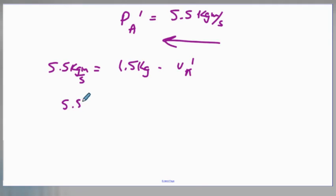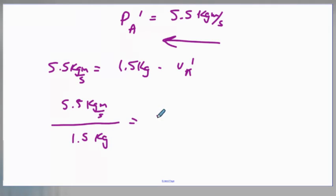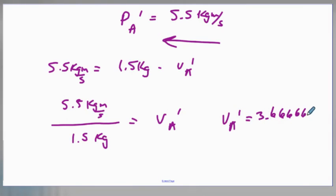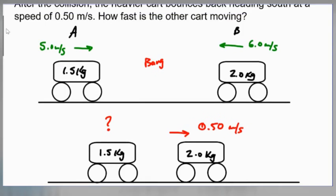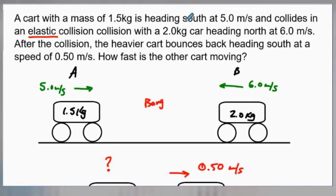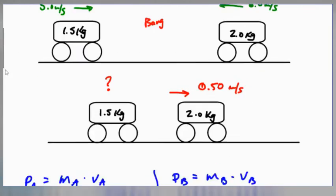Taking 5.5 divided by 1.5 kilograms gives us the velocity of cart A after the collision: approximately 3.67 meters per second. Initially it was moving south, so now it's going to be moving north.